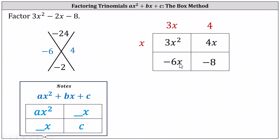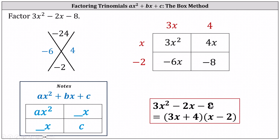In the second row, we have negative 6x and negative 8. The greatest common factor is 2, but because the first term in row 2 is negative, we use negative 2 as the greatest common factor. This indicates the factors of 3x squared minus 2x minus 8 are 3x plus 4 and x minus 2. And of course, we could multiply the two binomials to verify the result is correct.